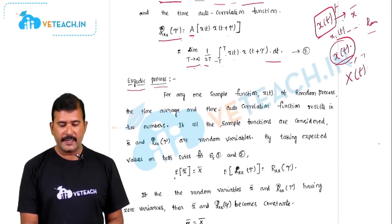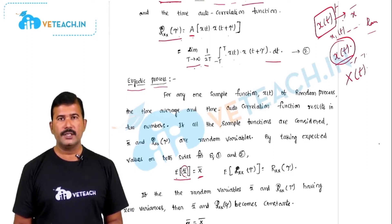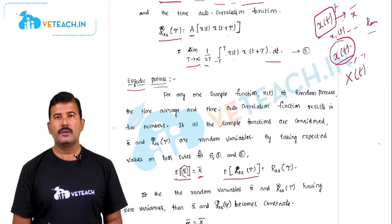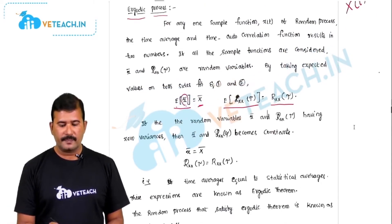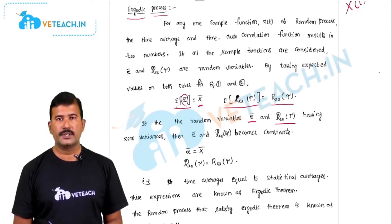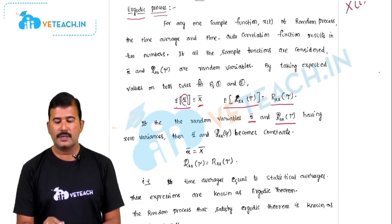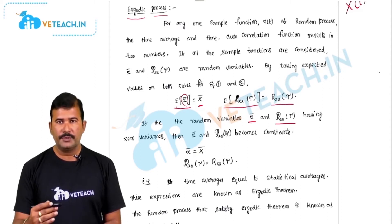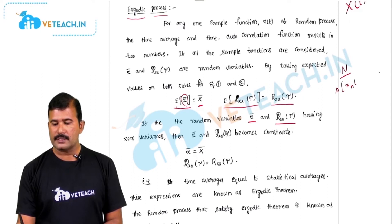If we find the expectation for such a random variable — that is, the expectation of the time averages of the sample functions — since the time averages are constants, their expected value is also a constant. Similarly, the expected value of the time autocorrelation function values is also a constant, which we can relate to the statistical autocorrelation function. So if we find the time average for all n sample functions, it becomes a random variable x-bar, and this is also a random variable for n number of sample functions.